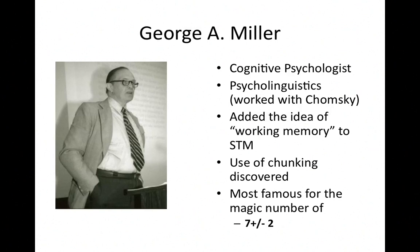George Miller was a cognitive psychologist who worked with Chomsky on psycholinguistics. He added the idea of working memory to short-term memory and discovered the use of chunking — combining ideas to make it easier to remember a great deal of information. He is most famous for the magic number of seven plus or minus two: the idea that working memory can only handle about five to nine bits of information at a time.